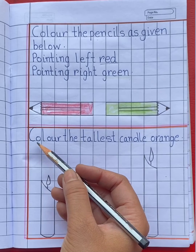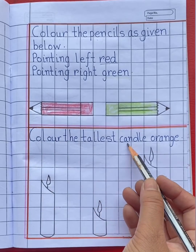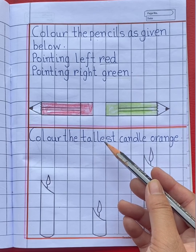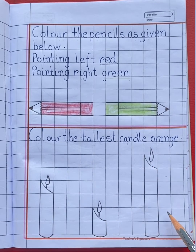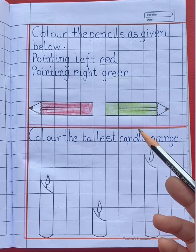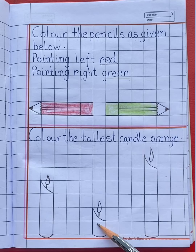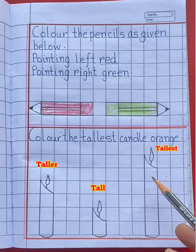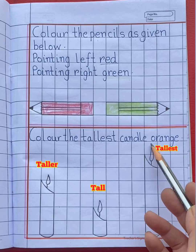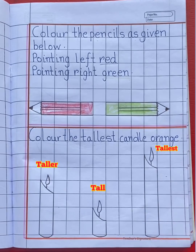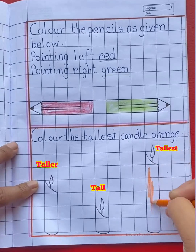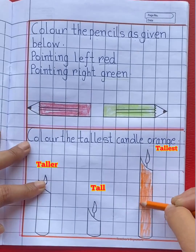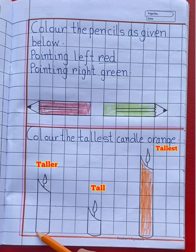The next question is: color the tallest candle orange. T-A-L-L-E-S-T, tallest. Now, look here. Here you can see three candles. We have to find the tallest candle. The second candle is tall, the first candle is taller, the third candle is tallest. So, color the tallest candle orange. Tall, taller, tallest.